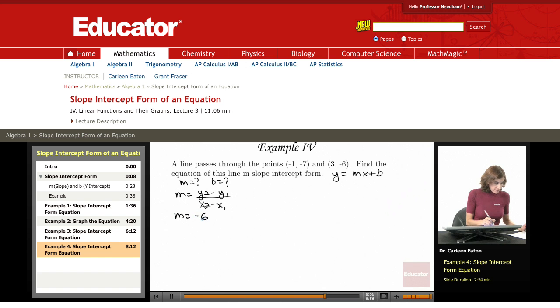Negative 6 minus negative 7 over 3 minus negative 1. Simplifying: minus 6 plus 7, and a negative and a negative gives me a positive. The same on the bottom, 3 plus 1. This gives me a slope of 1 fourth.